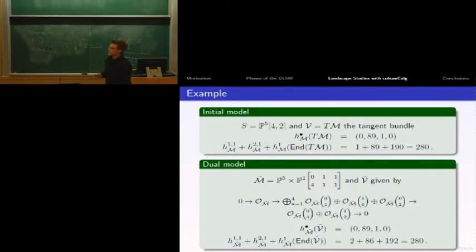If you perform our procedure, we get an intersection of three hypersurfaces in P5 times P1 with these multi-degrees. Our new bundle is given by this monad. This is not the tangent bundle anymore - it's still an SU3 bundle but some other bundle. If you calculate the cohomology, we still get 89 and 1. The full dimension stays the same at 280, supporting that there is actually an isomorphism.